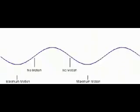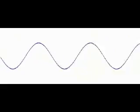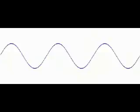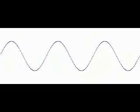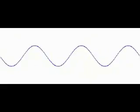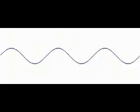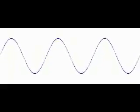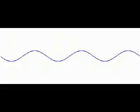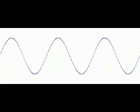Points exactly halfway between the nodes display the greatest amplitude change and are called anti-nodes. The fundamental frequency and wavelength and the next two possible standing wave patterns and their frequencies are illustrated in the animation.